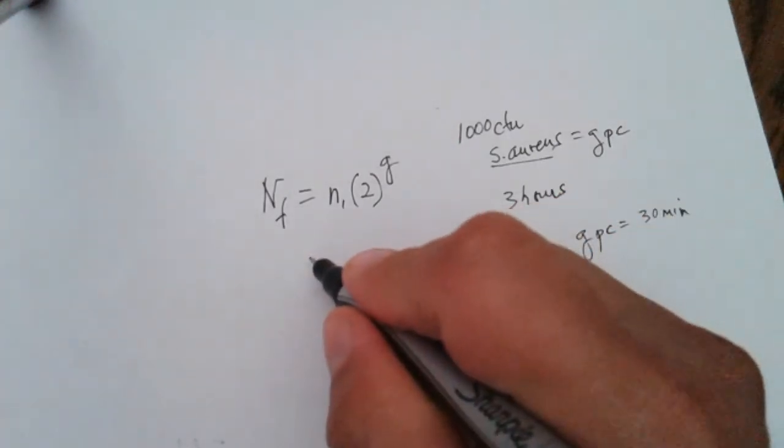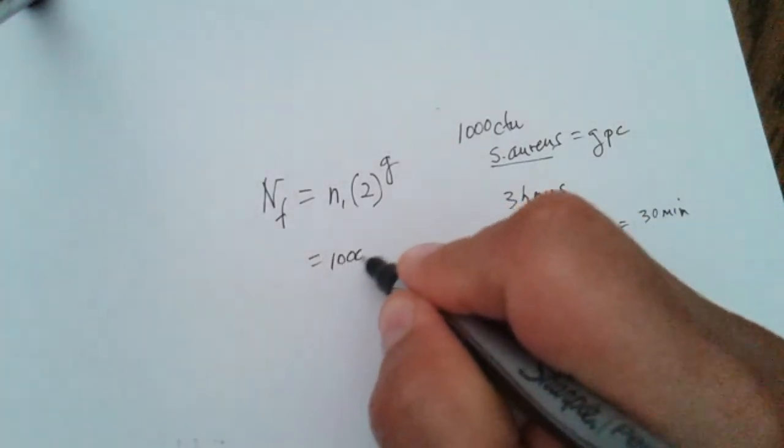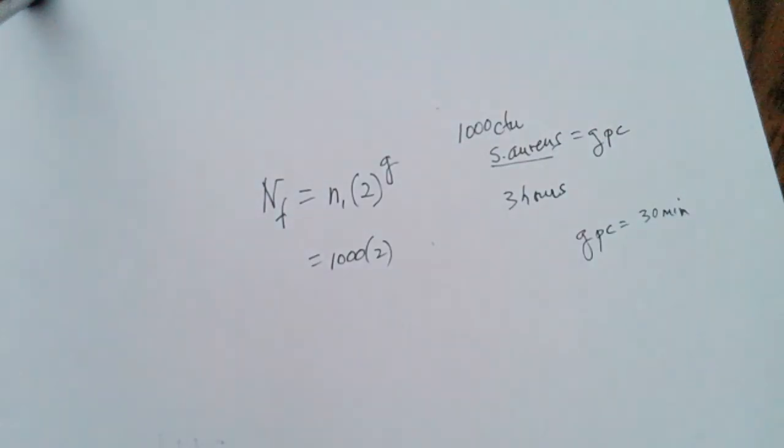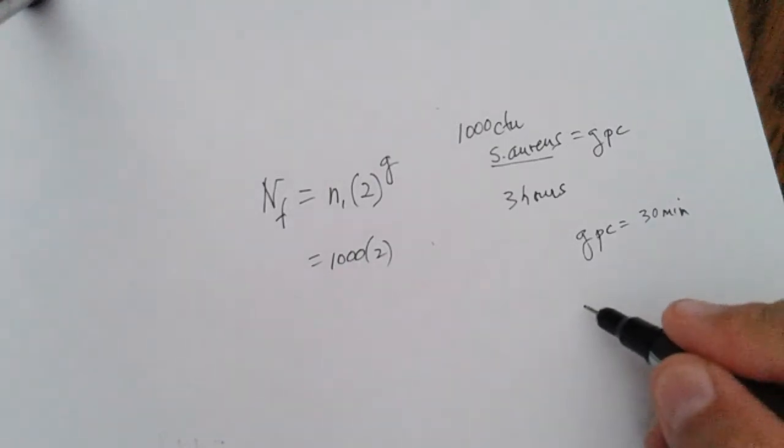So if we think about this, the initial population is equal to 1,000 times 2 for the number for binary fission.